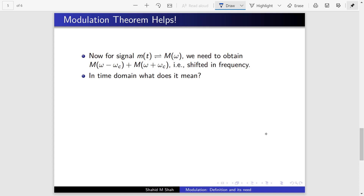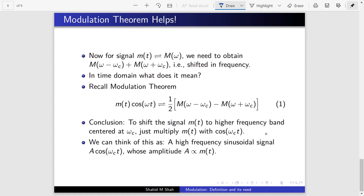So for a signal m(t) with Fourier transform M(ω), we need the right-shift plus the left-shift to make it real in the time domain. In the time domain, this corresponds to the modulation theorem: multiplying m(t) by cos(ω_c t) gives the shifted Fourier transform, placing the signal's frequency components at the high-frequency band centered at ω_c.